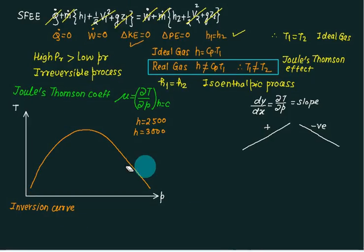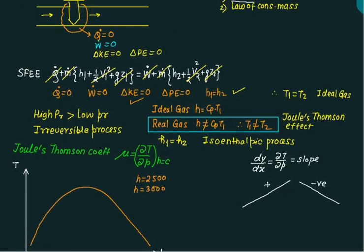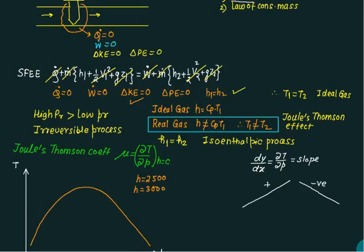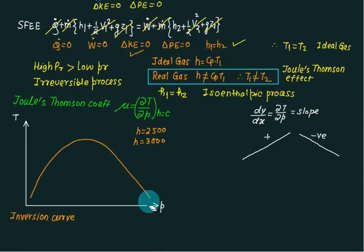In throttling, you move from high pressure to low pressure, so movement is only allowed in this direction. Check points A, B, and C: this one has positive slope, this one has negative slope, and B is horizontal—zero slope.